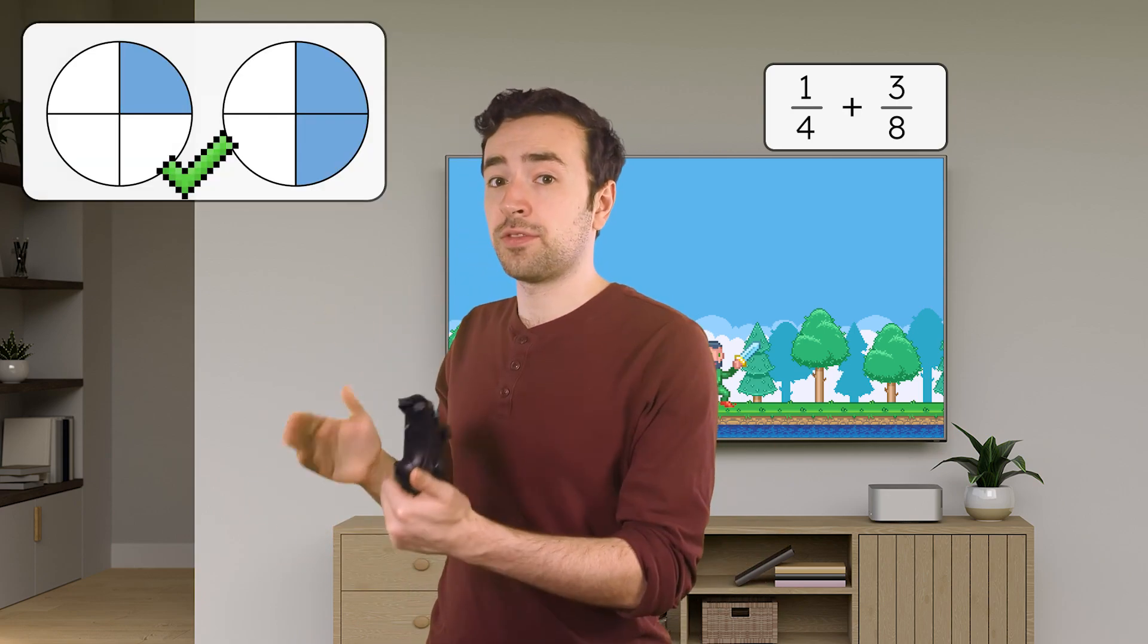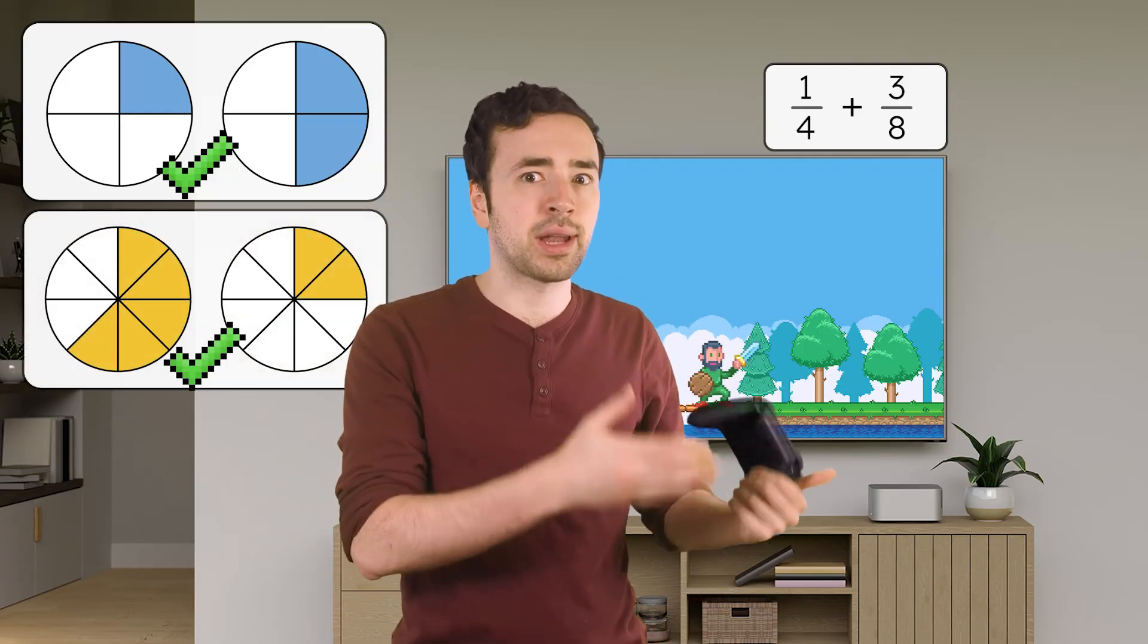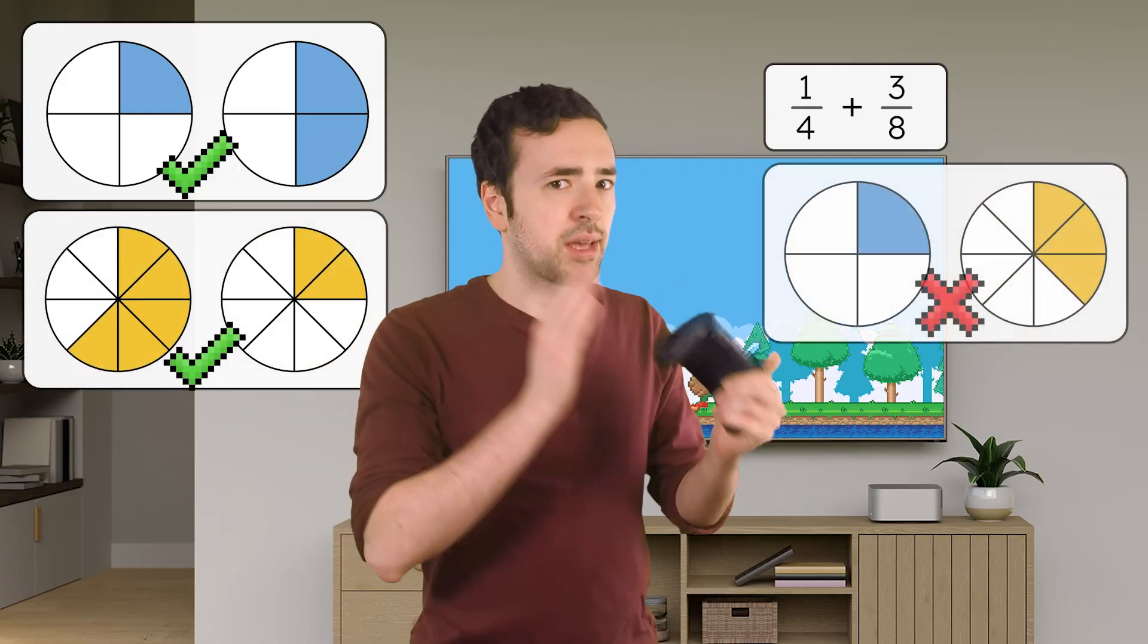Since one-fourth and three-eighths have different denominators, an extra step is needed because we can only add or subtract pieces that are the same size. We can add fourths and fourths, or eighths and eighths, but not fourths and eighths. Is there a way to represent one-fourth with a denominator of eight?